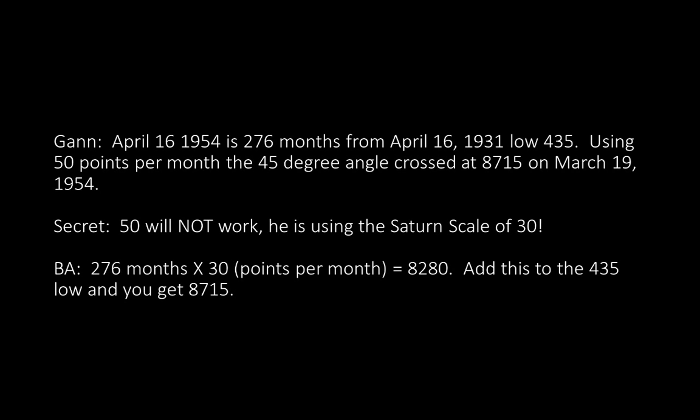Secret: 50 will not work. He's using Saturn scale of 30. So if you put 50 in the above, it's not going to work — the math will never work for you. Here is the right math: 276 months times 30 (which is 30 points per month) equals 8,280. Add this to the 435 low and you get 8,715. Visualizing this, he's taking a low and generating a line from that low based on a Saturn scale of 30 — the coffee low down there with a line emanating from it going up at the rate of 30 points per month, every single month.